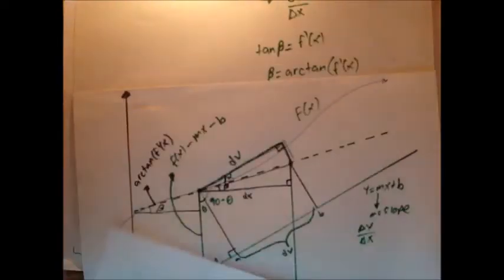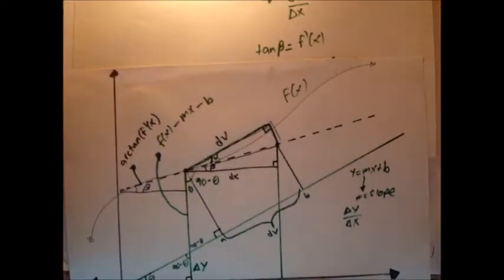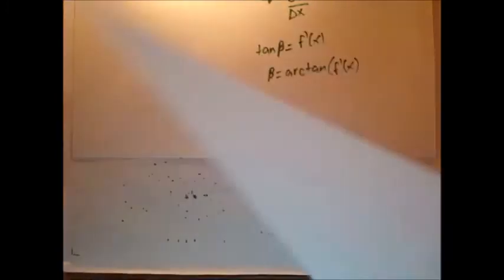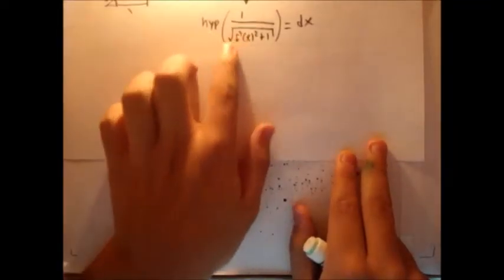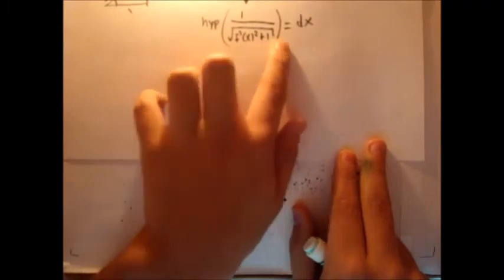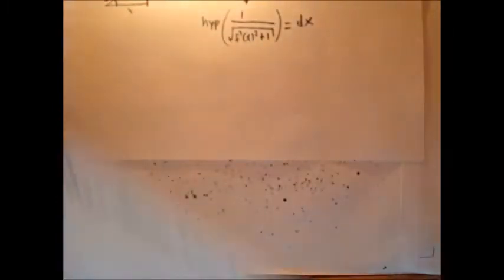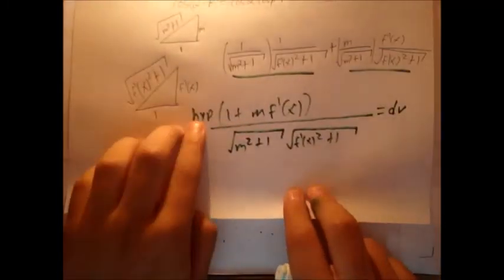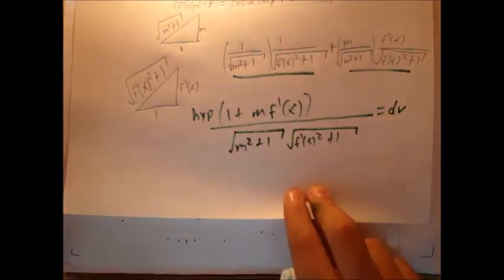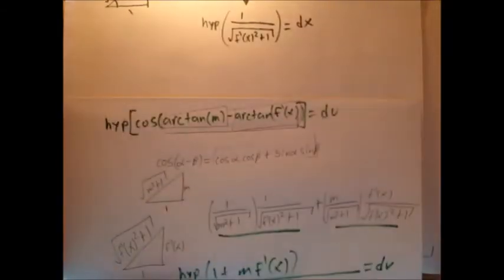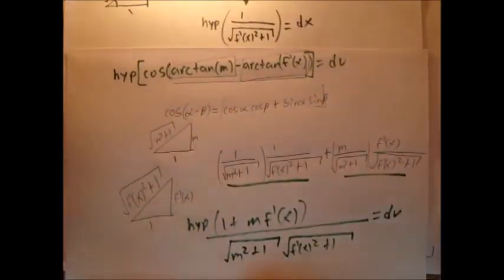So now I'm trying to find the paper I had right here. Just give me one second. Okay, I found it. We had hypotenuse 1 over square root f prime of x plus 1 equals dx. And here we have a much longer function. Hypotenuse 1 plus m f prime of x divided by this equals dv. Now I'm going to isolate for hypotenuse and then cancel them out.